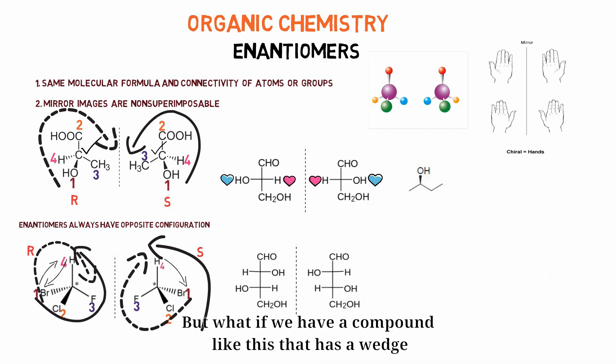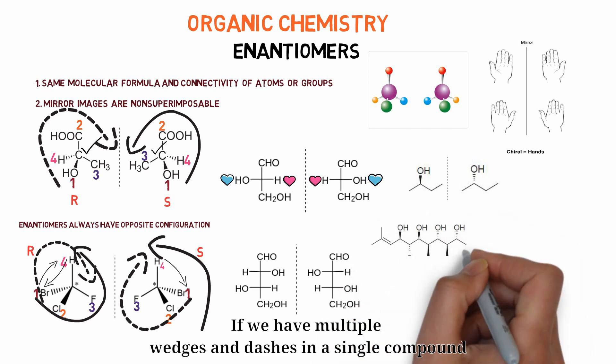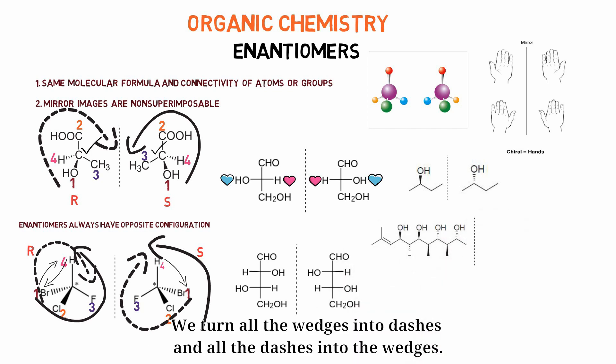But what if we have a compound like this that has a wedge? We simply turn the wedge into the dash to draw the enantiomer. And if we have multiple wedges and dashes in a single compound, we turn all the wedges into dashes and all the dashes into the wedges.